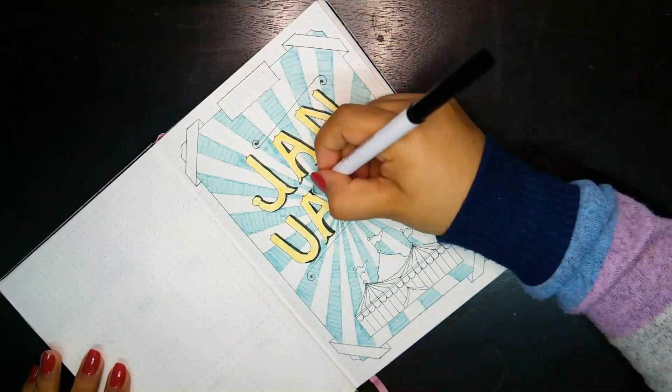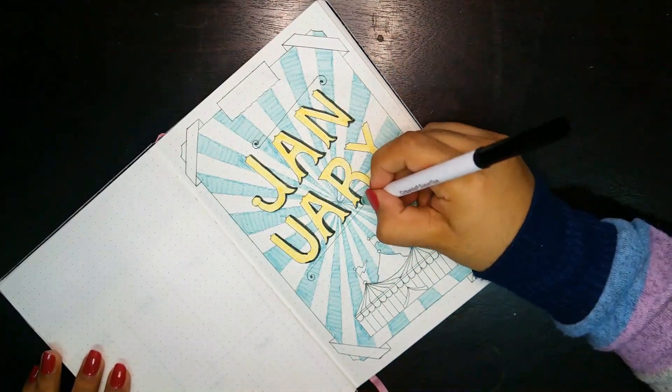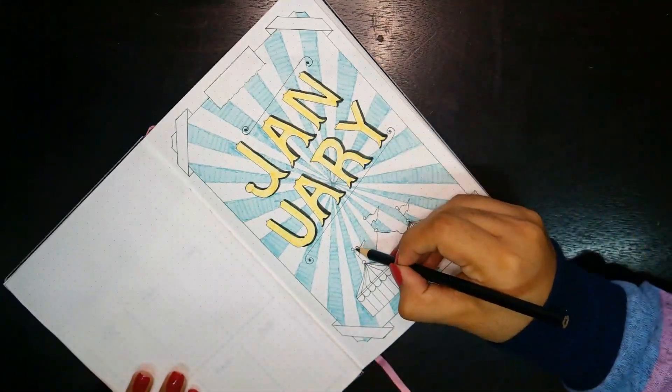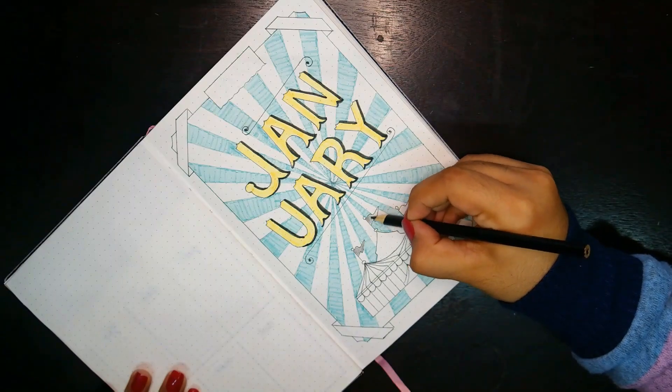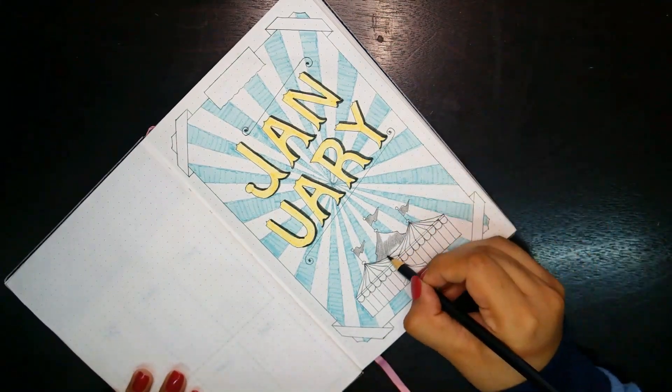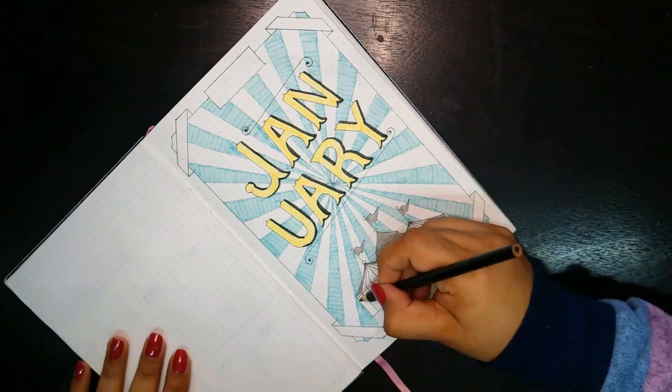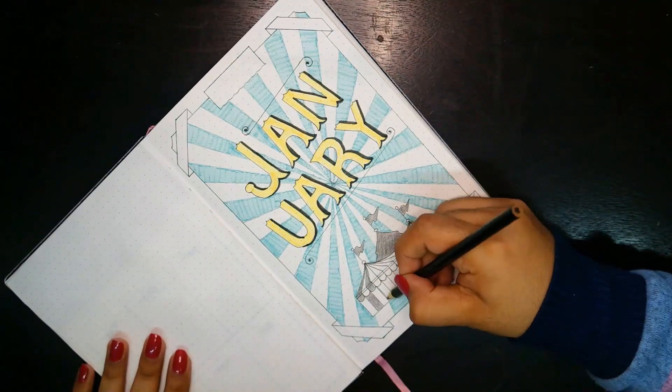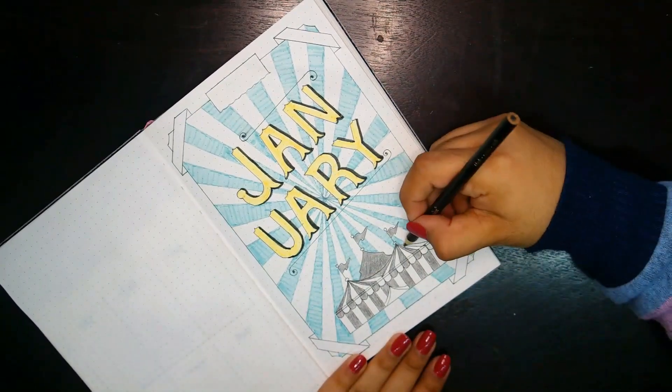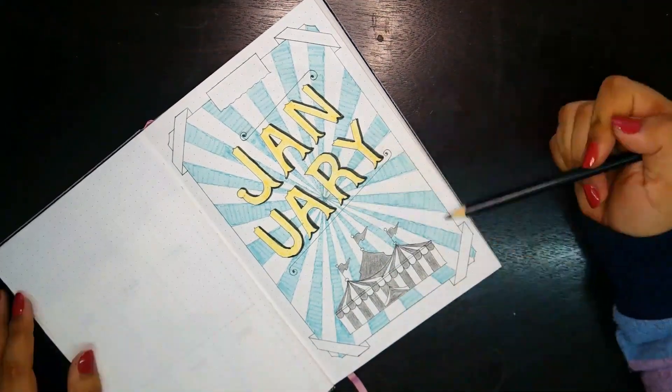The background was already quite bold even with the soft blue, so I really needed a bolder title so January could stand out. At the bottom of the page I drew a circus stand. Because I wanted the title to be the main focus, I used a black color pencil instead of a black marker. I think this really helped in getting that vintage look.